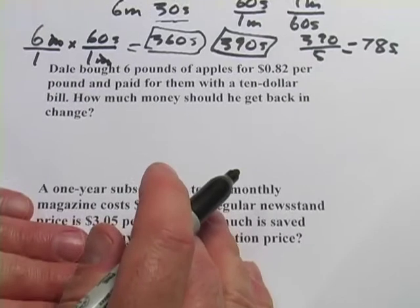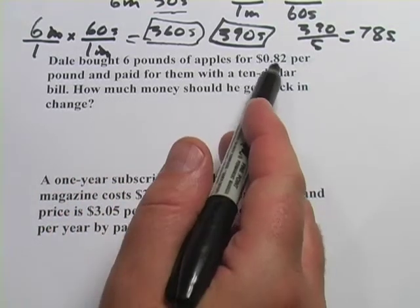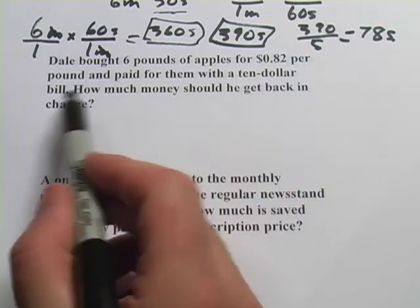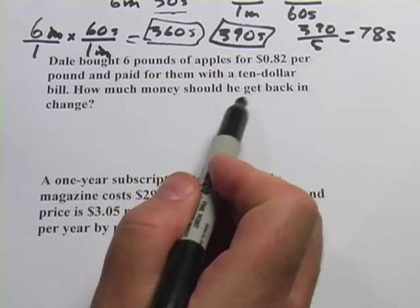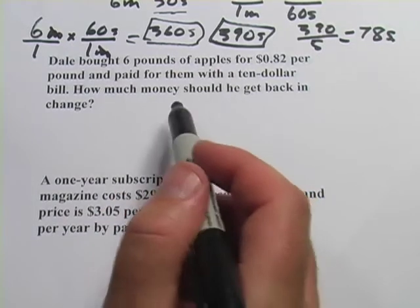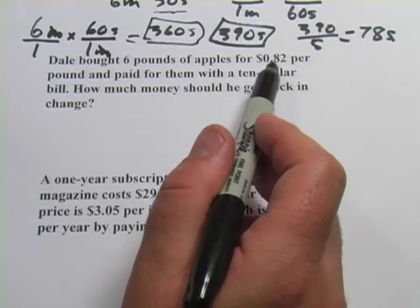All right, let's look at another one. This one says Dale bought six pounds of apples for 82 cents per pound and paid for them with a $10 bill. How much money should he get back in change? This one doesn't have a part A and part B, but there are really two things to do here. First, figure out what was his bill.